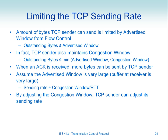One exam question asked about the difference between the congestion window and the advertised window. The congestion window controls the sending rate of the source so that we don't cause congestion in the Internet. The advertised window is used for flow control — it's not about congestion. Flow control is making sure we don't overflow the receiver. The receiver has a buffer as well, and that's different from congestion.